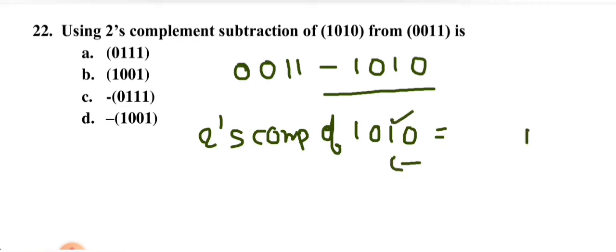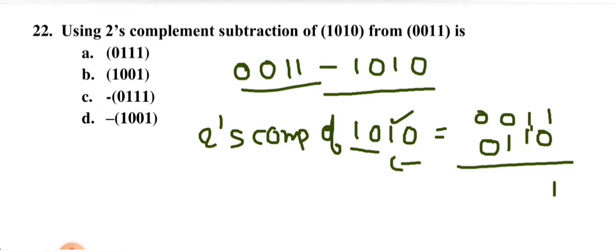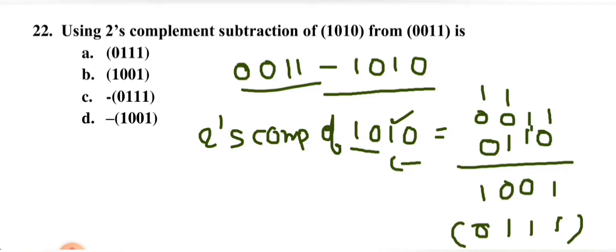Adding 0011 with the 2's complement of 1010: the result is obtained after binary addition. There is no carry generated, so we take the 2's complement of the result and show it with a minus sign. Important rule: if no carry is generated during 2's complement subtraction, take 2's complement of result and attach a minus sign. If carry is generated, discard it — the result is the correct positive answer. Option C is correct.